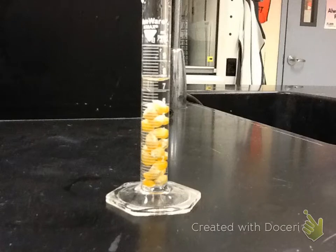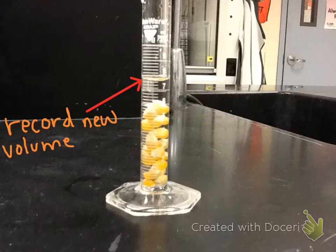Once you have that volume, then you simply put your 20 popcorn kernels into the water. And of course the water level should rise by the exact volume of those popcorn kernels. Keep in mind the difference between this new volume and the volume you just measured should be the volume of the actual popcorn kernels.